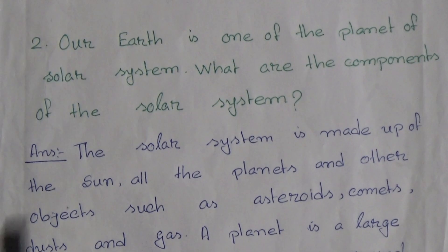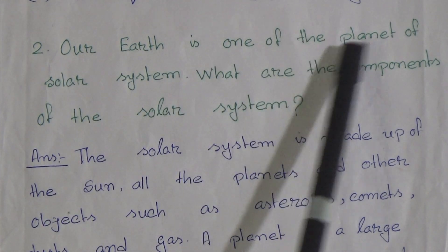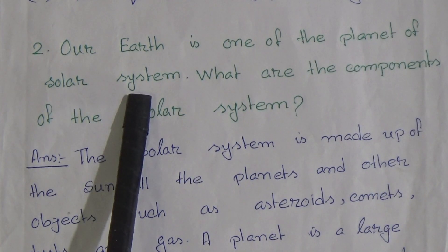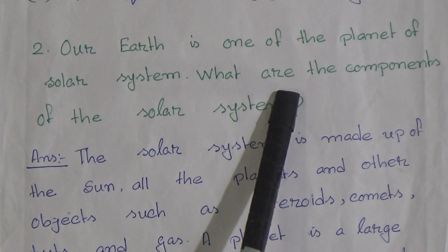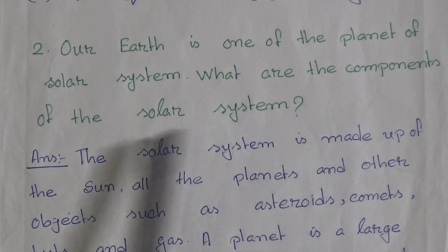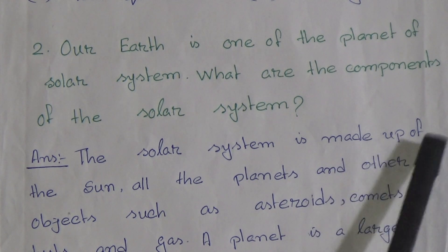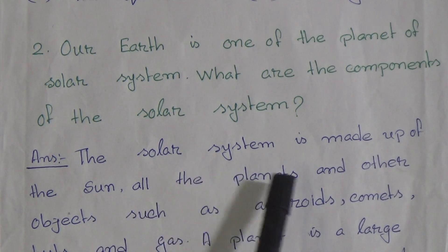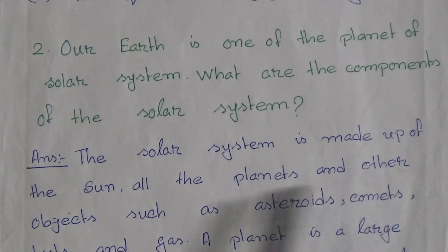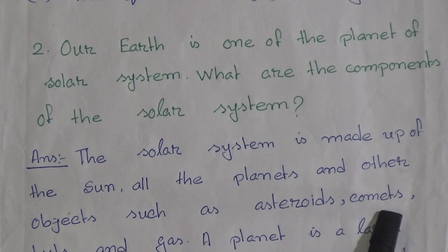Question number 2: Our Earth is one of the planets of the solar system. What are the components of the solar system? Answer: The solar system is made up of the sun, all the planets, and other objects such as asteroids, comets, dust, and gas.